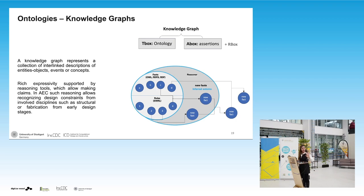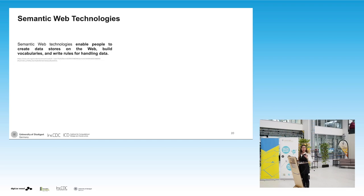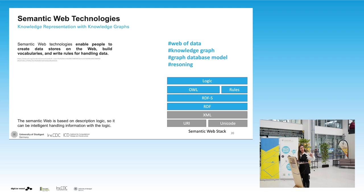All this technology lives under the umbrella of semantic web technologies, which enable creating data stores on the web, building vocabularies, and writing rules. The standard data model of the semantic web is RDF, which is structured in simple triples: subject, predicate, object — just like in the graph we saw, 'Alice is friend of Bob.' We can represent all these relations and entities, and then query information across platforms.